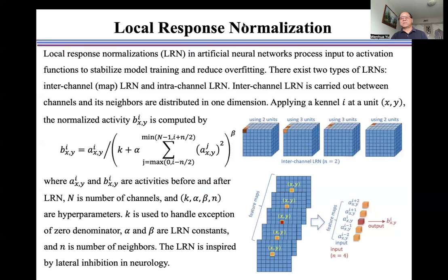Inter-channel local response normalization is carried out between channels, and its neighbors are distributed in one dimension. Applying a kernel I at unit XY, the normalized activity B is computed using this formulation, where A and B are activities before and after local response normalization. N is the number of channels, and K, alpha, beta, N are hyperparameters. K is used to handle the exception of a zero denominator, alpha and beta are local response normalization constants, and N is the number of neighbors.